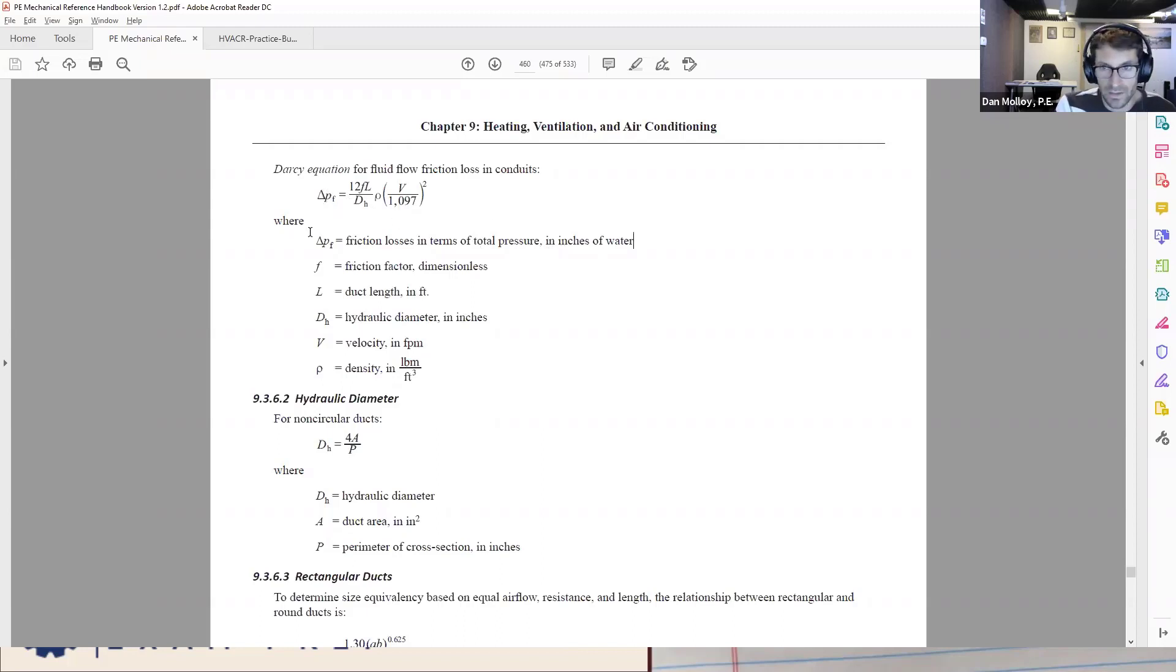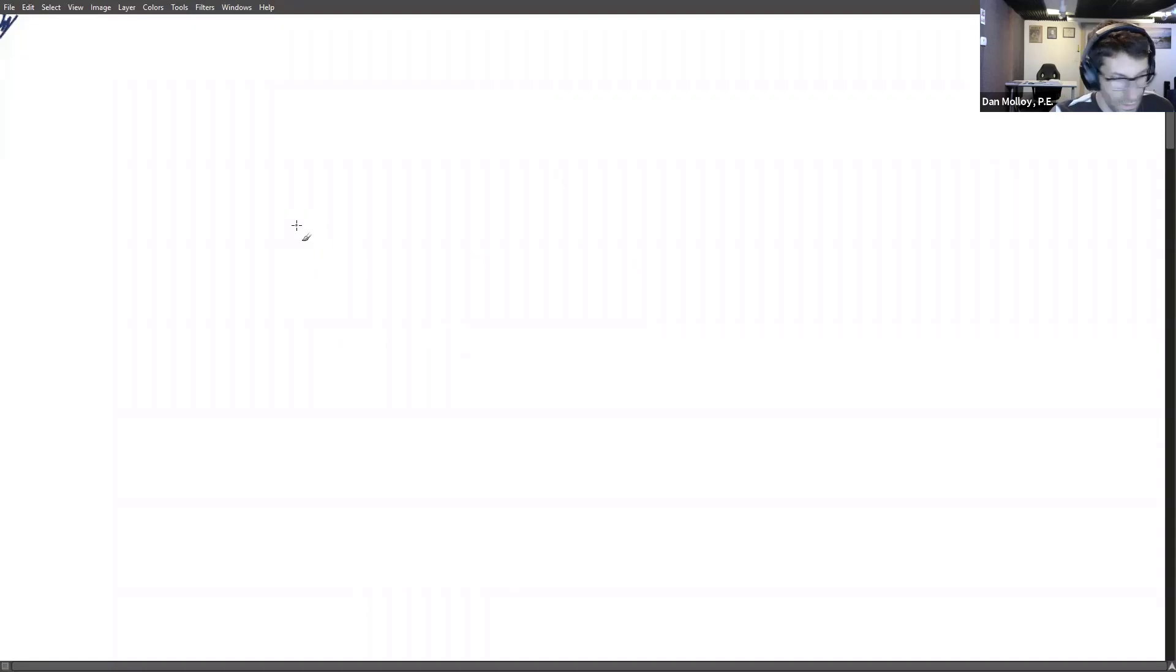So let's try substituting it in. So that formula is delta P sub F and that has to come out in, or at least it ought to come out in inches of water gauge if we put everything in the right way. 12FL over the hydraulic diameter d sub h times the density rho times this term velocity over 1097 squared.